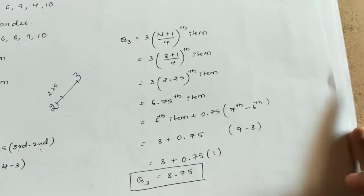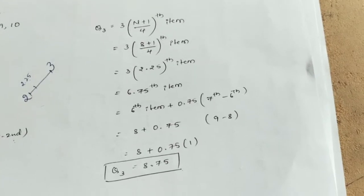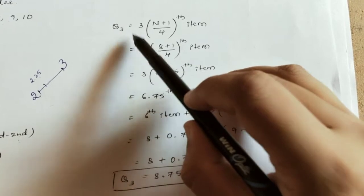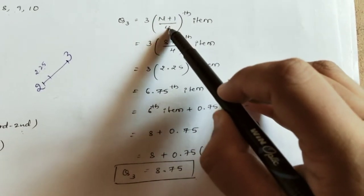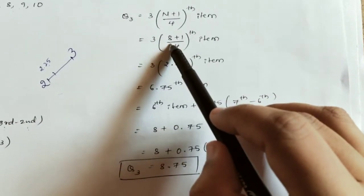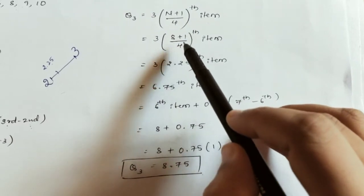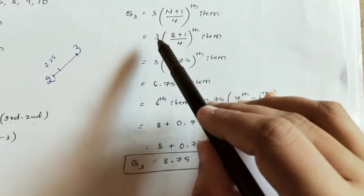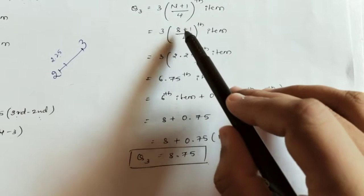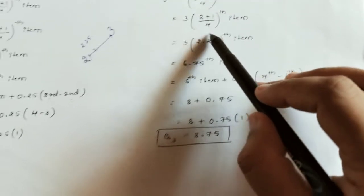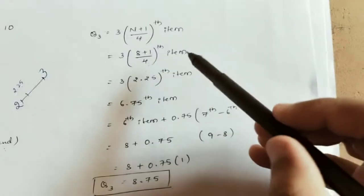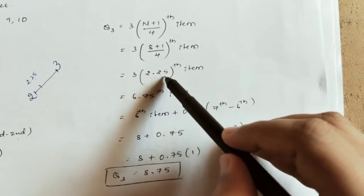Next we calculate Q3 using the same approach. The formula is 3 into n plus 1 divided by 4th item. So 3 into 8 plus 1 divided by 4, which is 3 into 9 divided by 4. This gives 3 into 2.25.